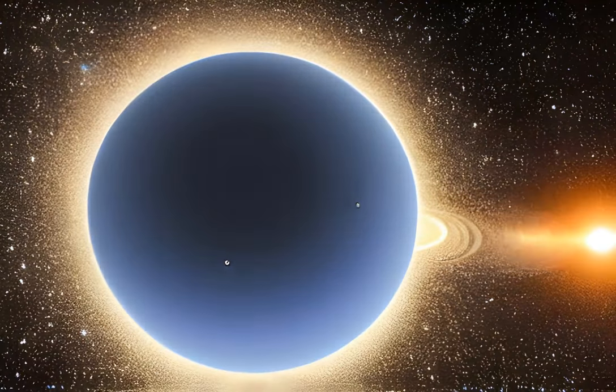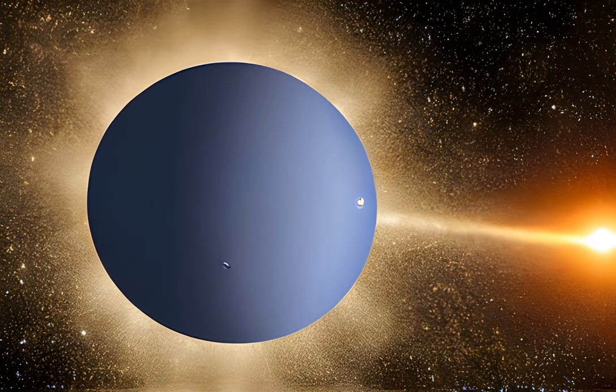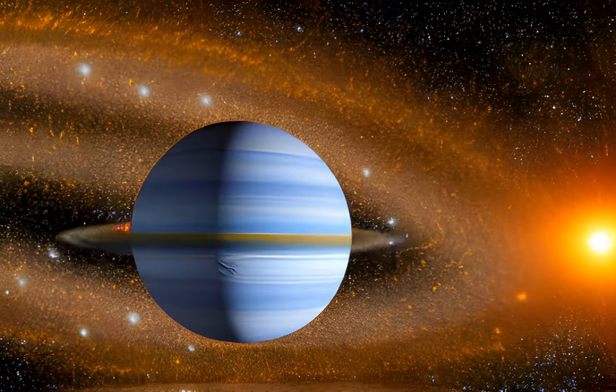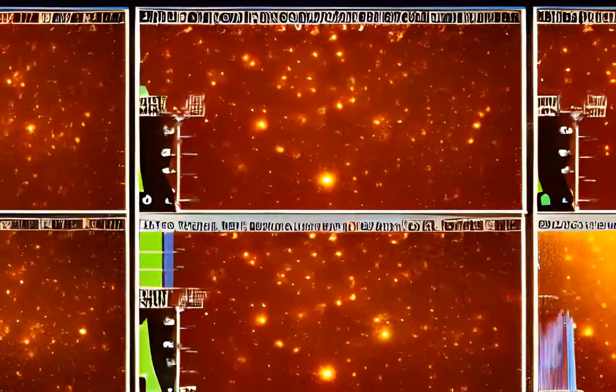According to the research team, one of the planets has a mass approximately half that of Jupiter, and the other has a mass 2.5 times that of Neptune. This is significant because large planets like Jupiter may have played a major role in the development of life on Earth by protecting the inner planets from strikes by smaller space bodies.